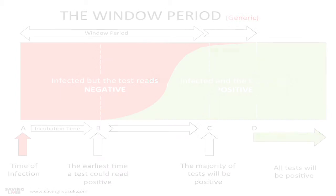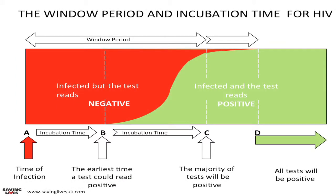Let me give you an example. For HIV, using the fourth generation tests, testing for the P24 antigen and antibody, the earliest time a test will become positive is approximately 14 days. The window period is 12 weeks at point D.